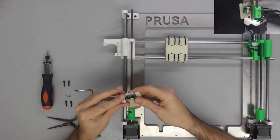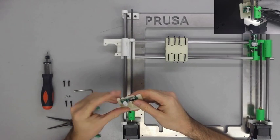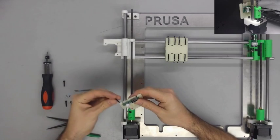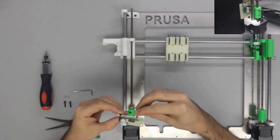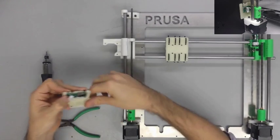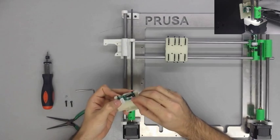First thing is first, we are going to get our mechanical end stop mounted onto the end stop holder before we mount it onto the motor. It's a little bit easier this way because you can actually get to the back of the screw and to the nut.